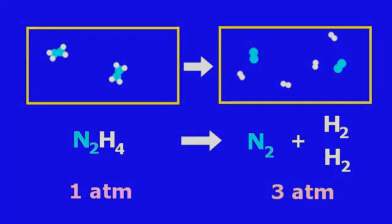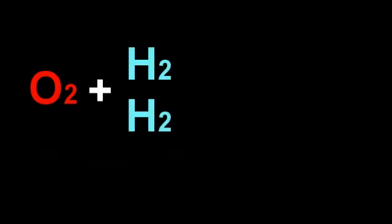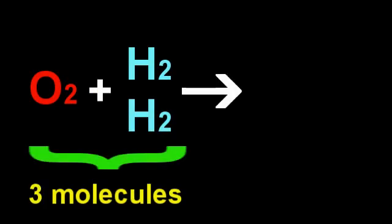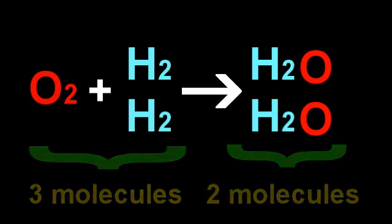Now, the bizarre thing about the hydrogen-oxygen burn, though, is it actually decreases the number of molecules of gas. That is, you start with three molecules of gas, and you end with two molecules of steam. And yet, hydrogen-oxygen is still one of the most effective rocket fuels available. So, how is this possible?